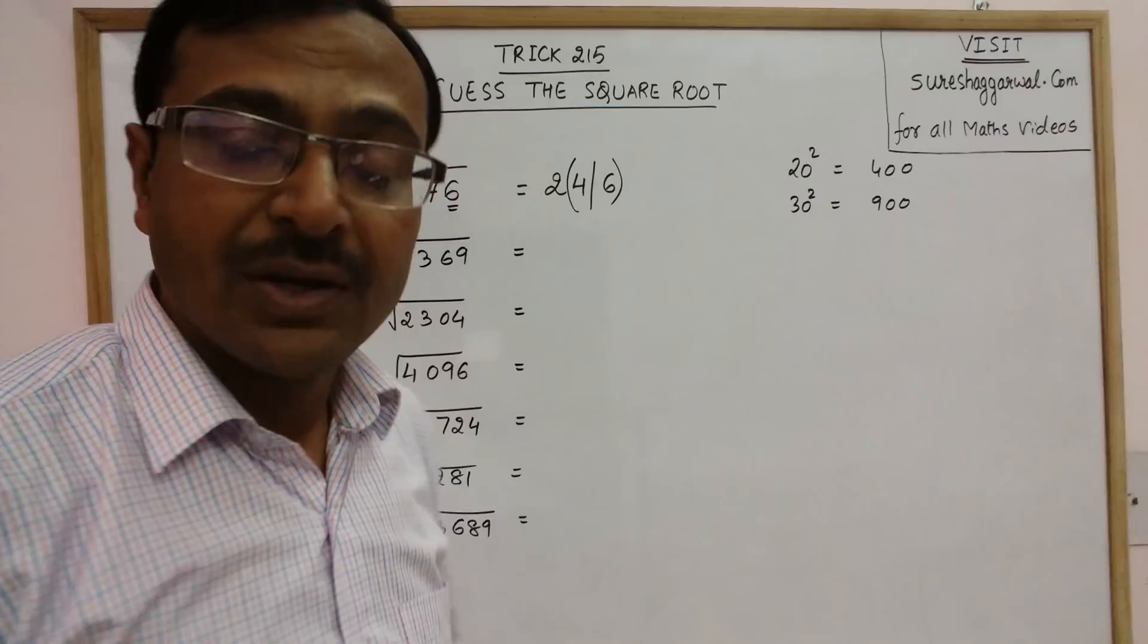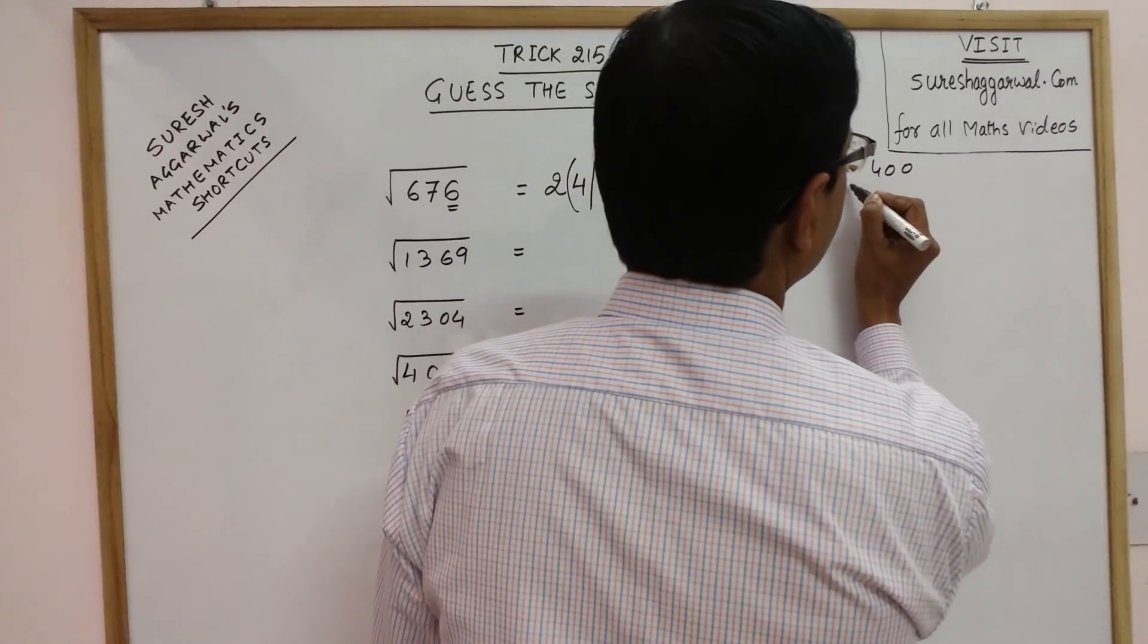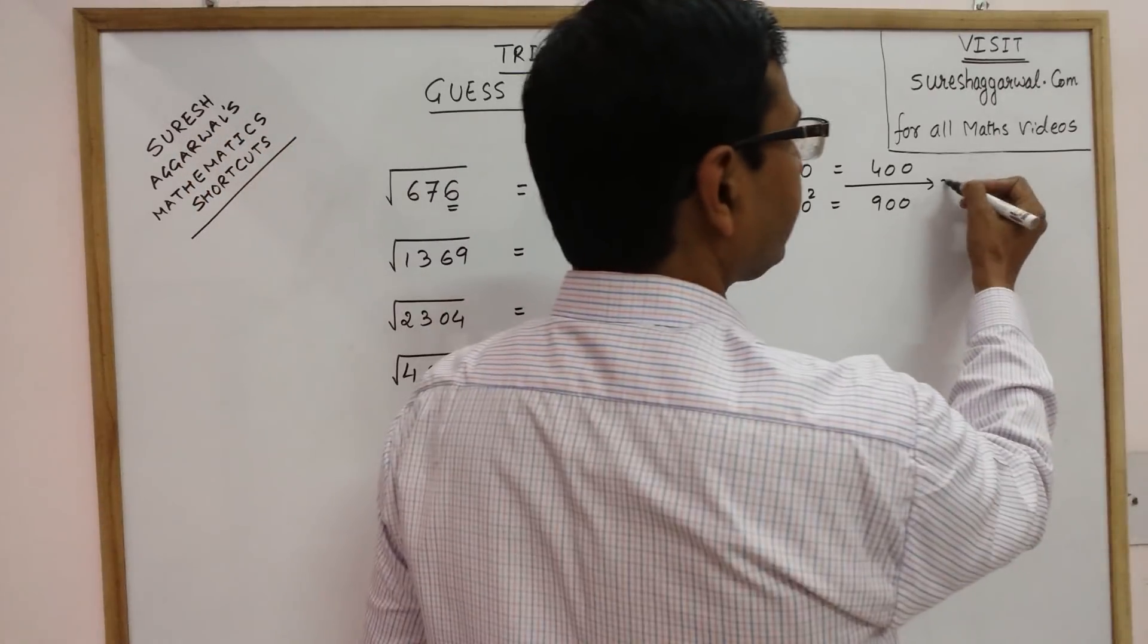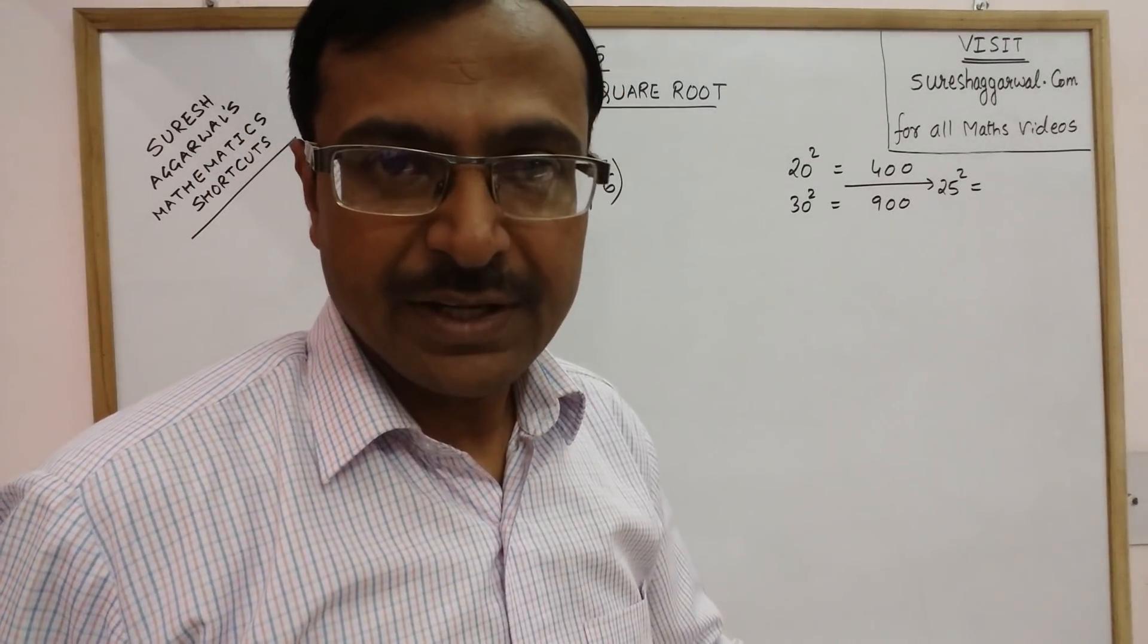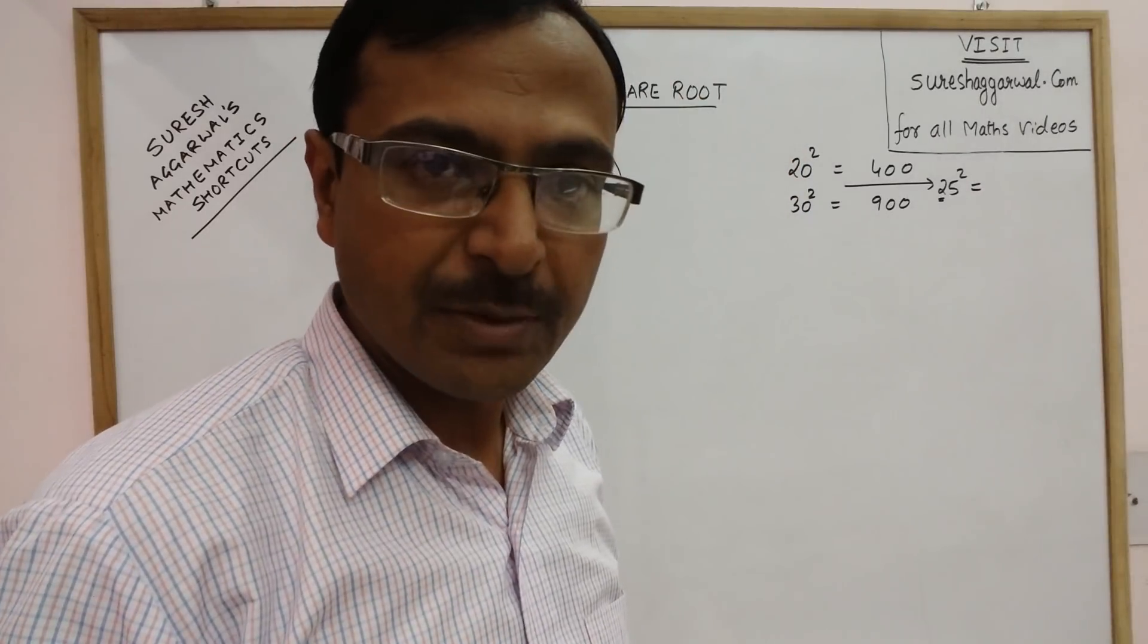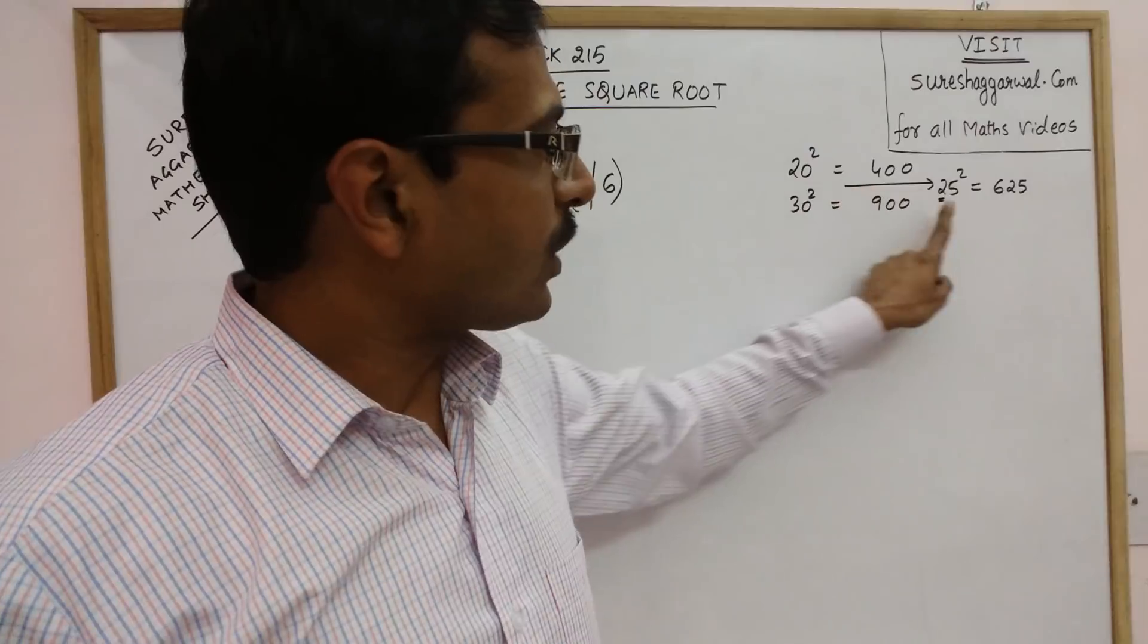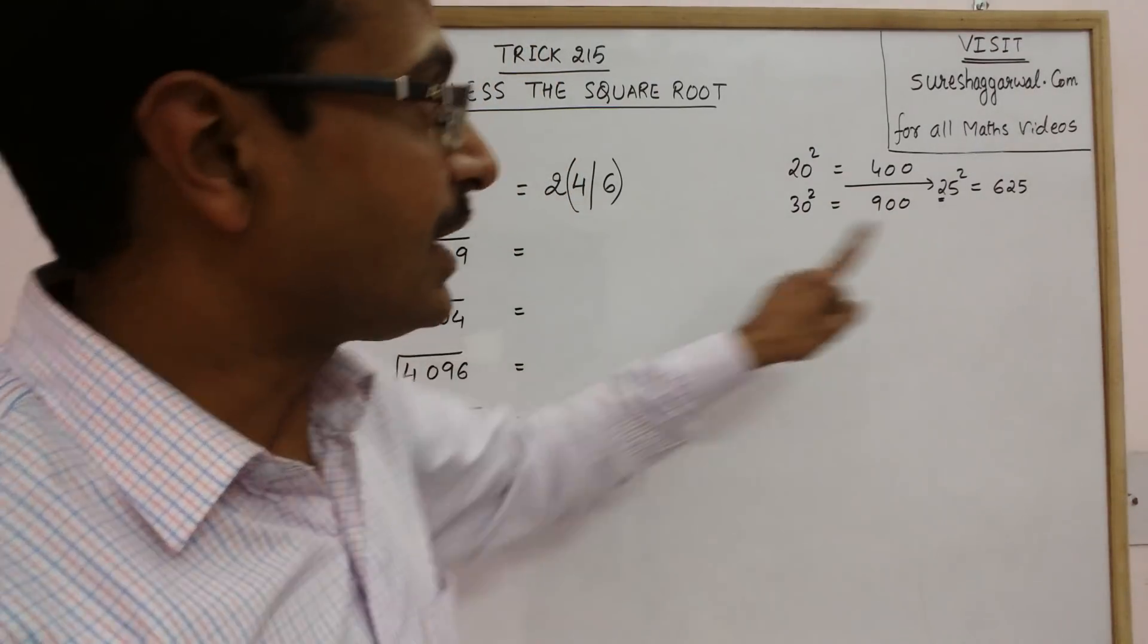Now to guess which of the two numbers is the correct answer, just take the number which lies in between these two numbers, 20 and 30. Between 20 and 30 we have 25. 25 square, the square of all numbers ending with 5 we can find that very easily. See, this is 2, what is the next number of 2, consecutive number 3. So 2, 3 is 6 and just put 25. Now see the square of 25 is 625. Our number 676 is greater than 625.